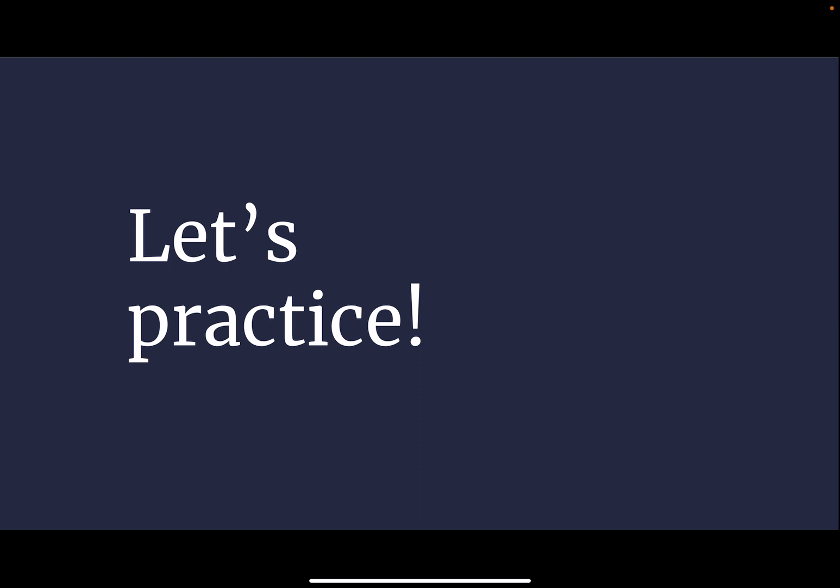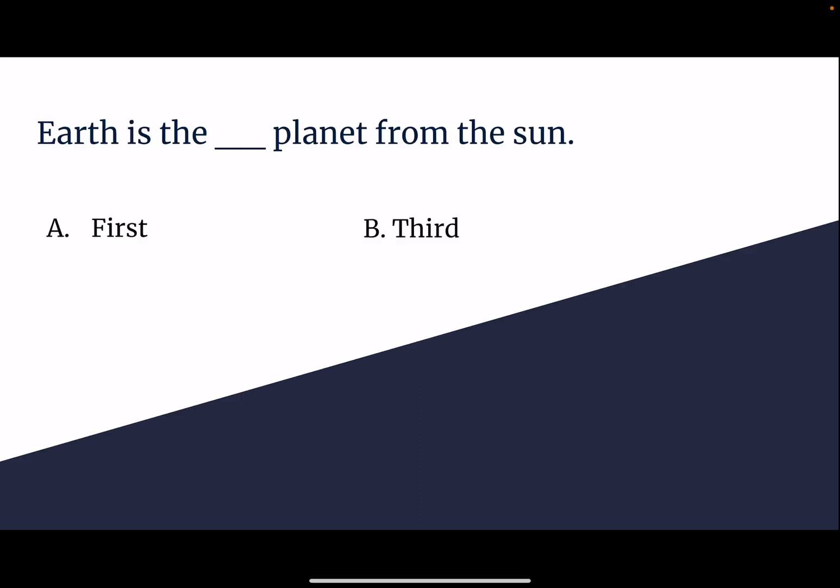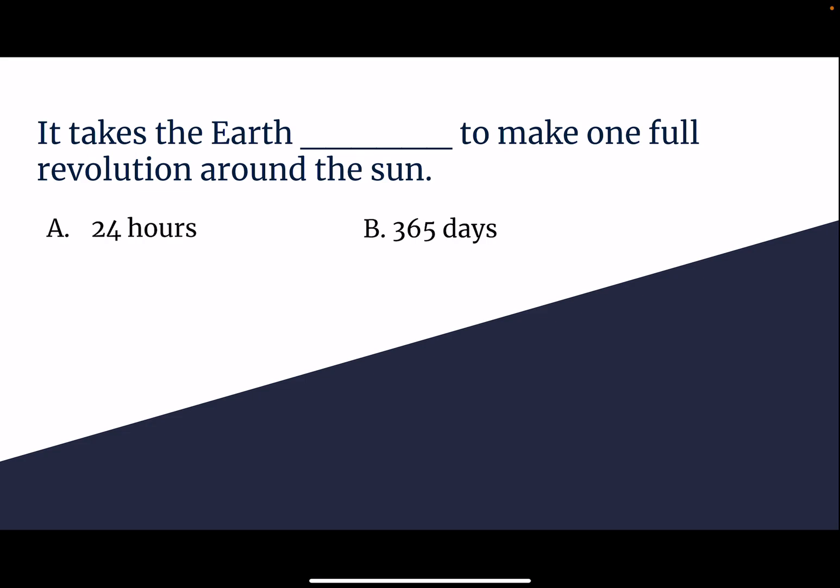Now let's practice. Earth is the first or third planet from the Sun? Earth is the third planet from the Sun. It takes the Earth 24 hours, or 365 days, to make one full revolution around the Sun? It takes the Earth 365 days to make one full revolution around the Sun.